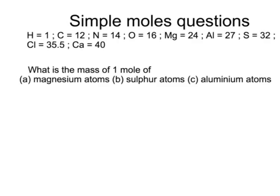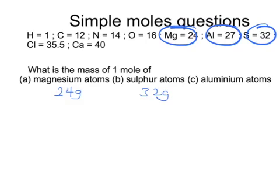You'd never get an exam question quite as easy as this one, but: what's the mass of one mole of magnesium atoms? Magnesium has a relative atomic mass of 24, so that's 24 grams. Sulfur is 32, so that's 32 grams. Aluminium is 27, so that's 27 grams. Easy peasy.